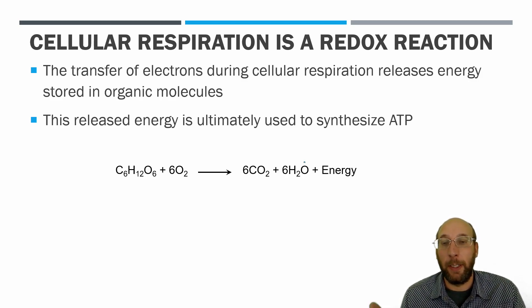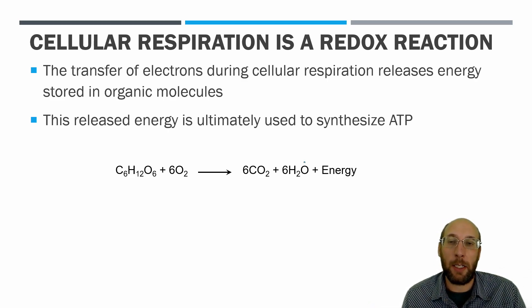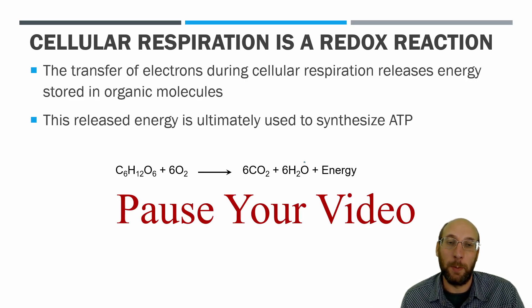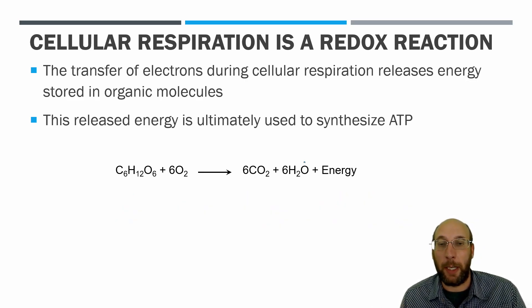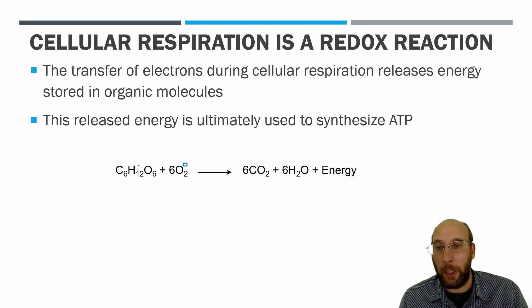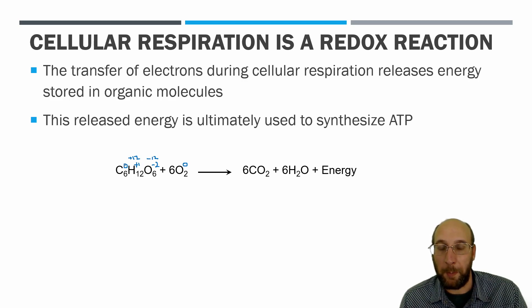Take a look at the cellular respiration reaction and figure out what is being oxidized and reduced. Elemental oxygen has an oxidation number of zero. Hydrogen in glucose is +1 and oxygen is −2, giving −12 from oxygens and +12 from hydrogens in glucose, so carbon has an oxidation state of zero in glucose. In carbon dioxide, oxygen is −2.